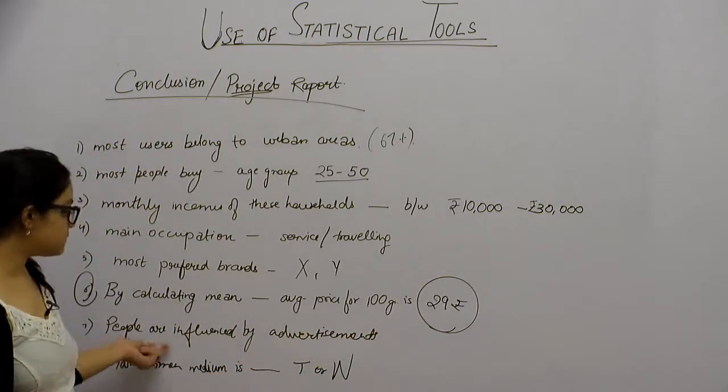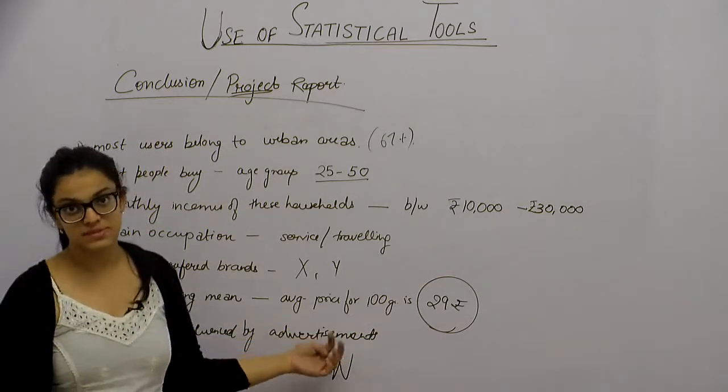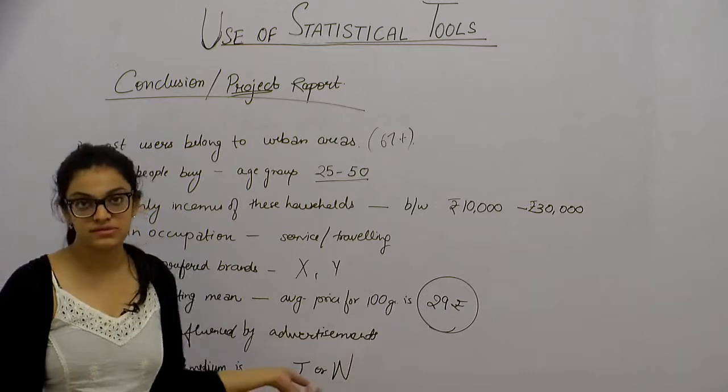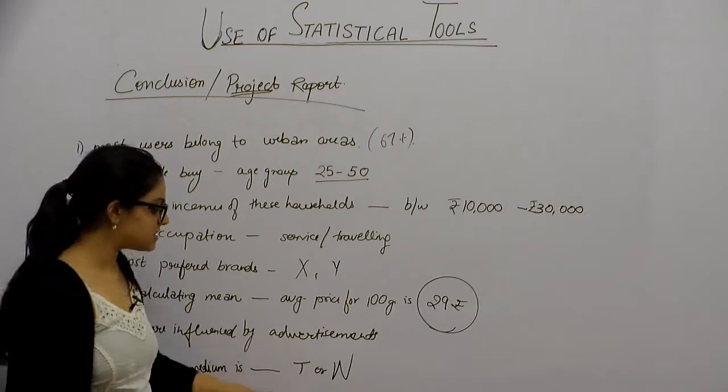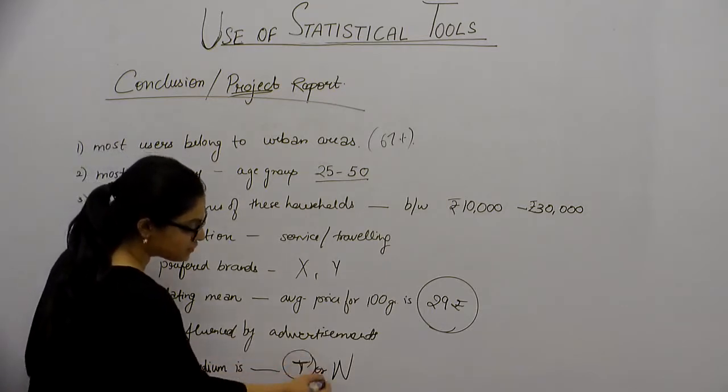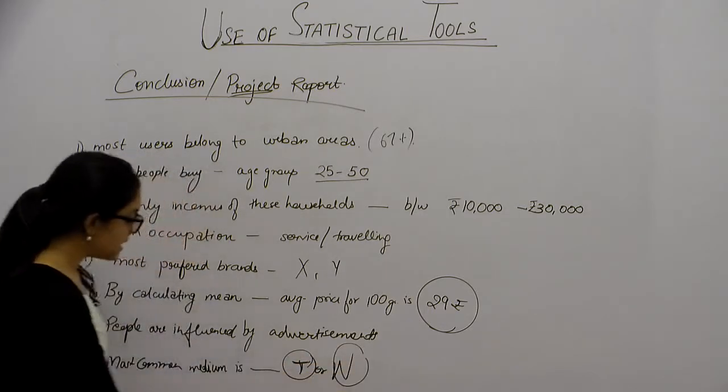And people are influenced by advertisements. Most people are influenced by advertisements. Eighth is, most common medium to reach people is either TV or newspapers. And so on.